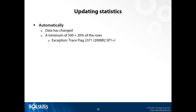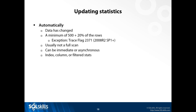Consider a table with 100,000 rows - 20% is 20,000 rows. If 20,000 rows change, stats will be automatically updated the next time they're used. For very large tables like 100 million rows, 20% is a really high number and probably doesn't change that often - which is one reason for trace flag 2371, which makes the threshold lower. The automatic update usually isn't a full scan of the data, which for really large tables is okay. You can also control whether it happens immediately or asynchronously.